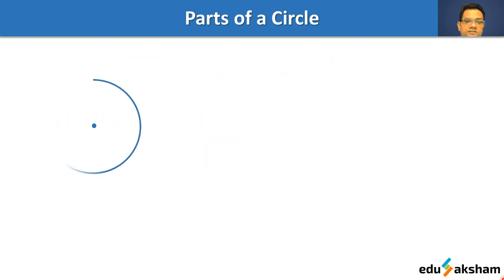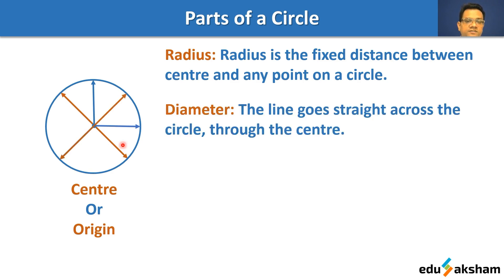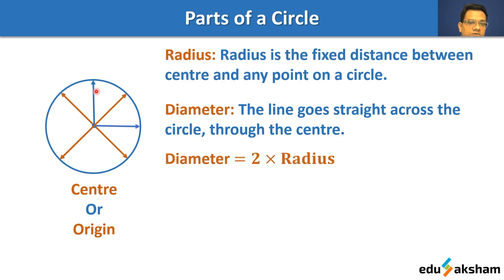Now let us draw a circle. The point in the center which is equidistant from all the points is called the center or origin of the circle. If we join any point on the circle to this center point, that is called the radius. So the radius is the fixed distance between the center and any point on the circle. When we join two opposite points passing through the center, it becomes the diameter. By definition, the diameter is the line that goes straight across the circle through the center, and the diameter is twice the radius.